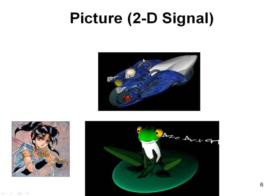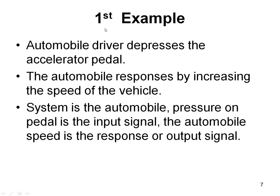We have an example for a two dimensional signal. A two dimensional signal means you require two independent variables — for example, one x value and one y value is needed to define any particular point in an image. So it is an example of a two dimensional signal. Now let me give you the practical examples of signals and systems.